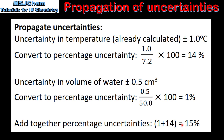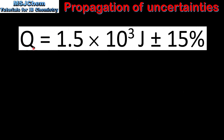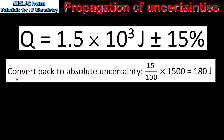We then add together the percentage uncertainties to give us a total percentage uncertainty of 15%. So now we can quote our value of Q as 1.5 × 10³ joules ± 15%. We can also convert back to absolute uncertainty by dividing the percentage uncertainty by 100 and multiplying by 1500, which gives us an absolute uncertainty of 180 joules.